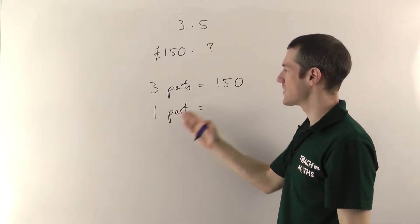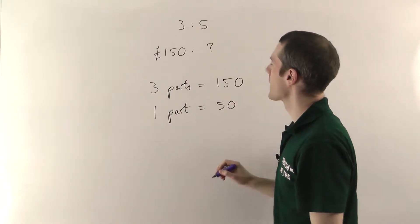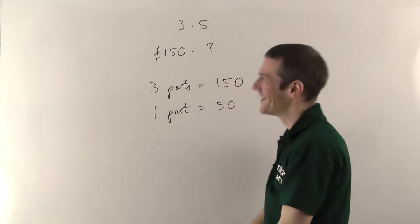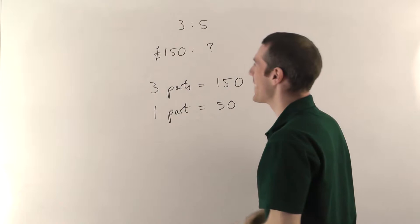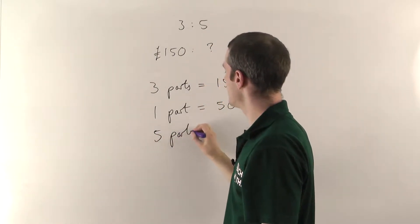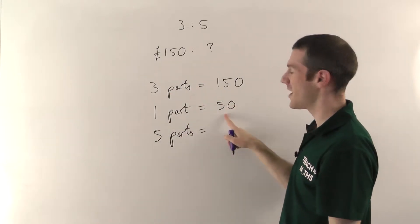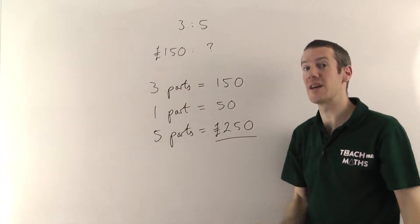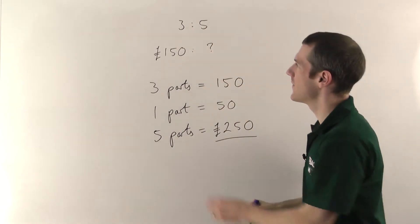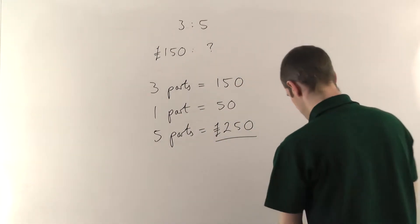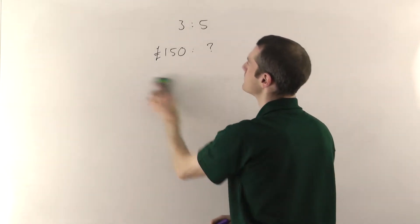We want to find one part, so we divide by three — 150 divided by 3 gives us 50. One part is 50 pounds. We already know the three parts is 150 pounds; we just need to find what the five parts is. So five parts is five lots of one part — five lots of 50 — so the second person gets 250 pounds. Just be careful: it doesn't always give you the total amount. If it gives you one person's share, divide down by their number of parts to find one part, then multiply up.